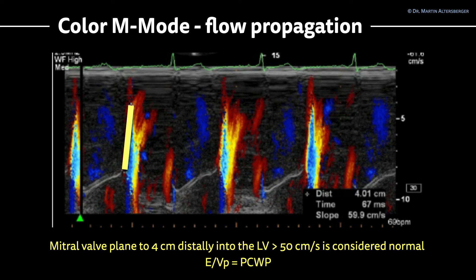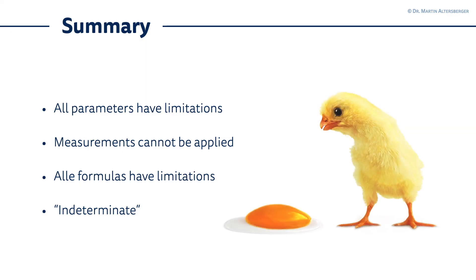You can see it quite nicely here. You measure from the mitral valve plane in color M-mode 4 centimeters distally into the LV; above 50 centimeters per second is considered normal. If it's below 50 centimeters per second, there may be elevated filling pressures. The E-to-propagation velocity ratio can also help calculate the pulmonary capillary wedge pressure, though this measurement has several pitfalls and it can be difficult to delineate the mitral valve inflow or mitral valve planes.